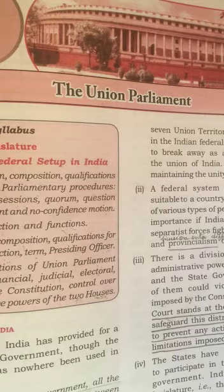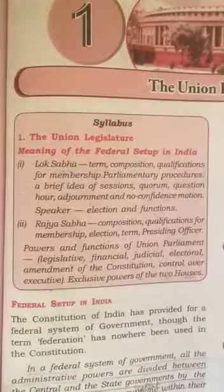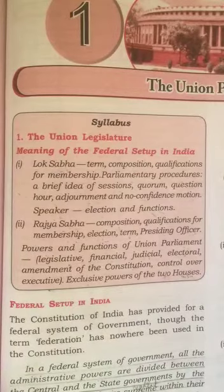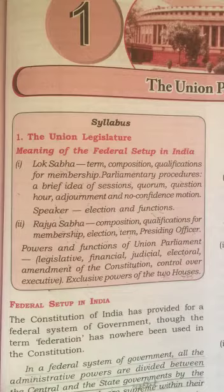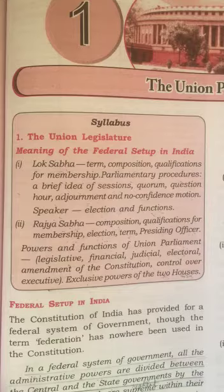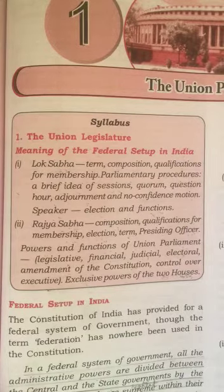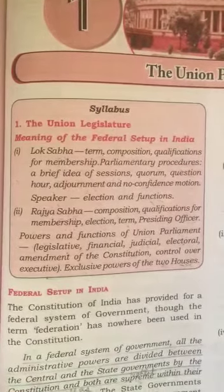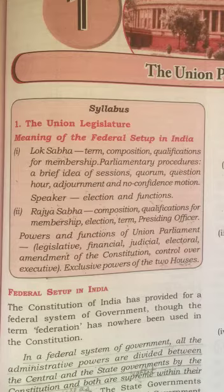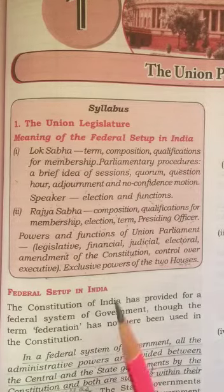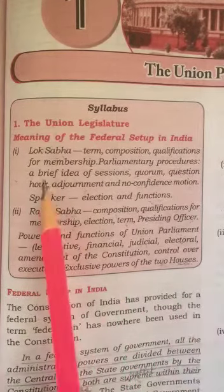Parliament refers to the first organ of the government, that is the legislative. Now let's have a look at the syllabus. In this chapter we'll cover: the Union Legislature, meaning of the federal setup in India, Lok Sabha — term, composition, qualifications for membership, parliamentary procedures, sessions, quorum, question hour, adjournment and no-confidence motion, Speaker — election and functions, Rajya Sabha — composition, qualifications, election, term and presiding officer, powers and functions of Union Parliament — legislative, financial, judicial, electoral, amendment of the Constitution, control over executive, and exclusive powers of the two houses, Lok Sabha and Rajya Sabha.